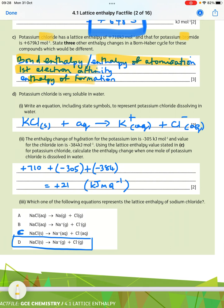And potassium chloride is very soluble in water, write an equation, including state symbols to represent potassium chloride dissolving in water. So, we've got KCl for potassium chloride, AQ for the water, and then the two ions K+, and Cl-, which are both aqueous. And potassium chloride is solid to begin with.